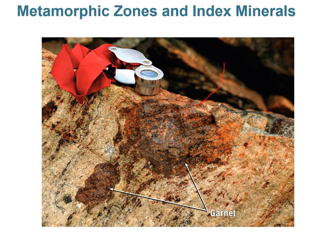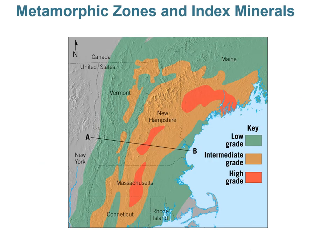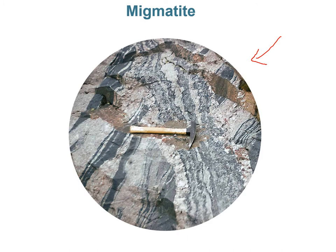Garnets found in metamorphic rocks help determine different metamorphic zones. Here in New England, based on metamorphic rocks exposed from the old Appalachian Mountains, we can map zones and find where the roots of those mountains were during regional metamorphism. Areas shown in red indicate high-grade metamorphism at the core, surrounded by intermediate grade, and then low-grade metamorphic rocks further out.